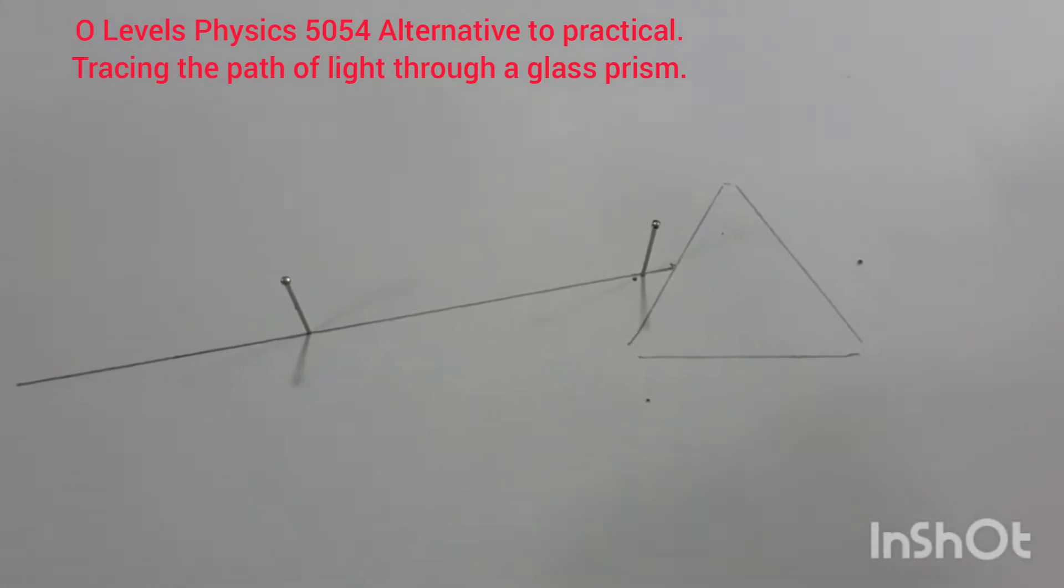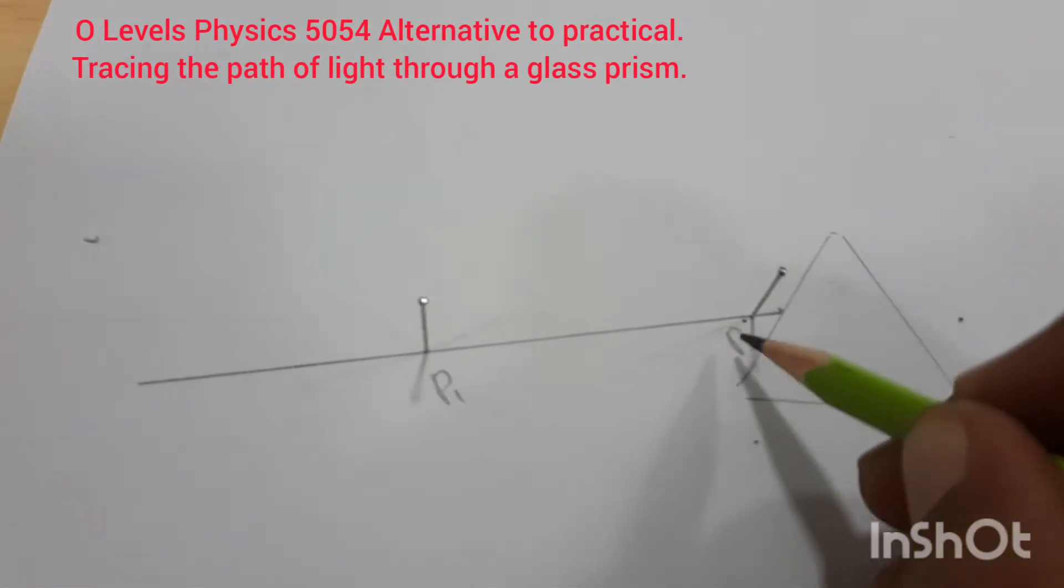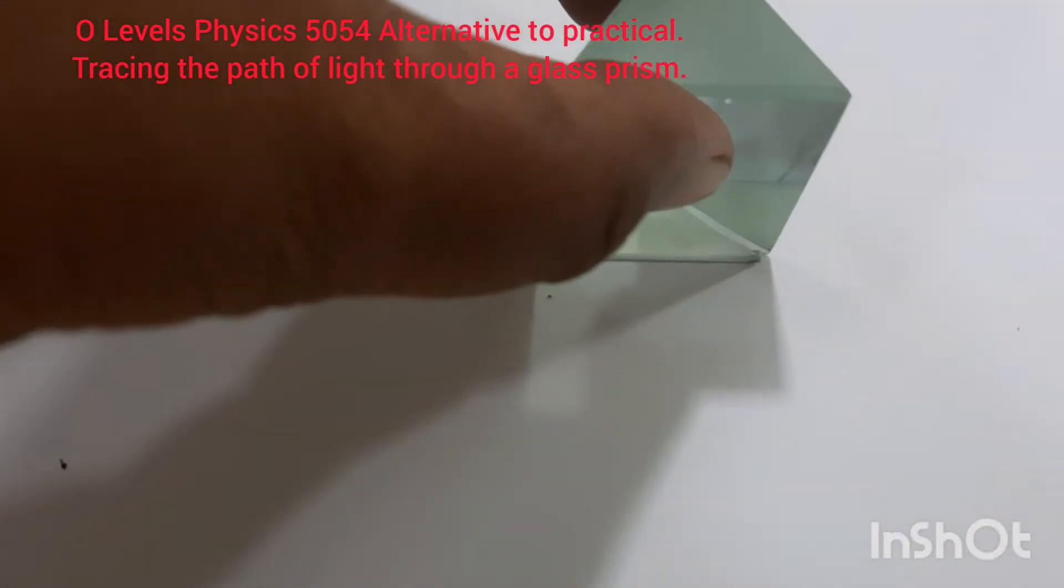After drawing the straight line, put two pins. Let us call this pin one. This is pin two. So on that straight line, we have placed two pins, pin one and pin two. And then place that prism back.